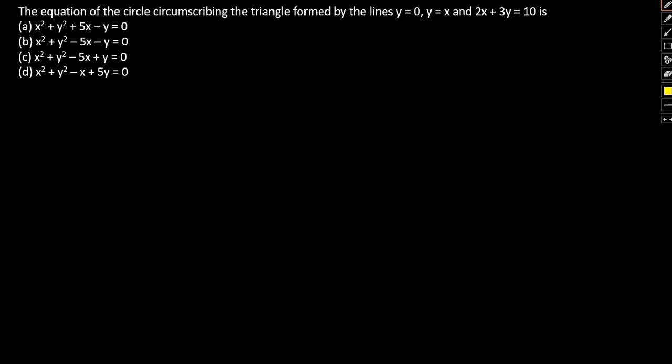We have the lines y = 0, y = x, and 2x + 3y = 10. If y = 0, we get the point (0,0) since x will also be 0. For y = x, substituting into 2x + 3y = 10 gives 5y = 10 and 5x = 10, so the point is (2,2). If y = 0 in 2x + 3y = 10, then x = 5, giving the point (5,0). These are the three vertices.